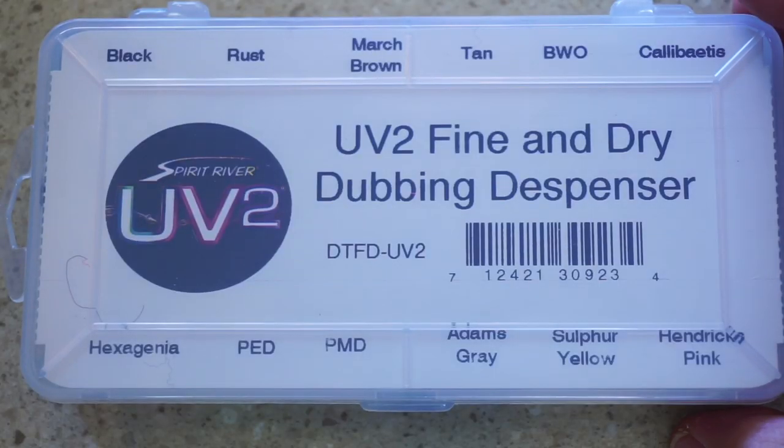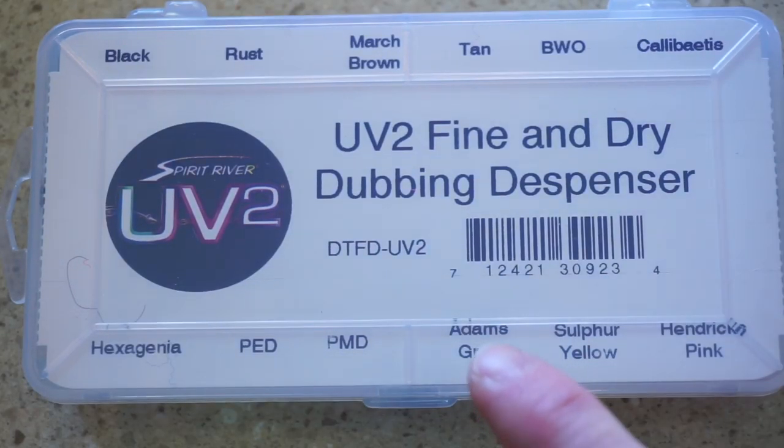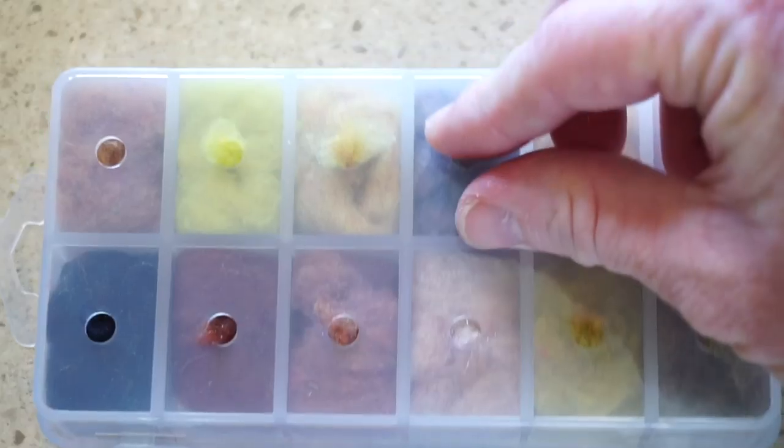Now for dubbing, I like using this UV2 fine and dry dubbing in Adams Gray. It's easy to use and will float really well. And you only need a small amount.